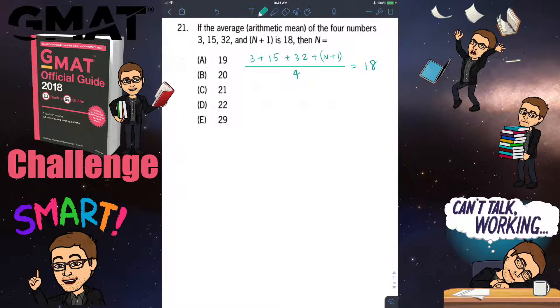Now you just solve this equation for n. Since on the left hand side we have a fraction, let's get rid of that fraction. I'm going to multiply both sides by 4 to cancel the denominator. On the left what I have is 3 plus 15 plus 32 plus n plus 1, and the denominator is gone.